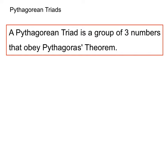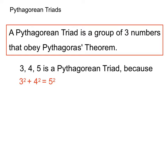So, let's look at the most famous example. 3, 4, and 5 is a set of three numbers. And we call them a Pythagorean triad because if we process them into the Pythagoras rule, 3 squared plus 4 squared does equal 5 squared.